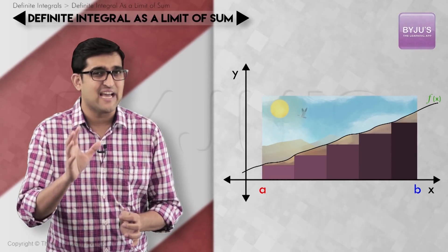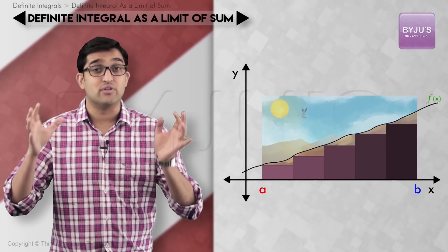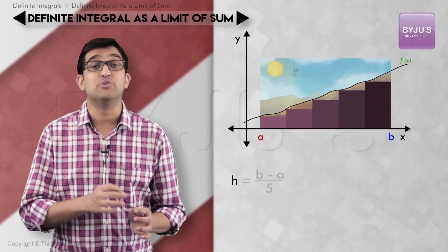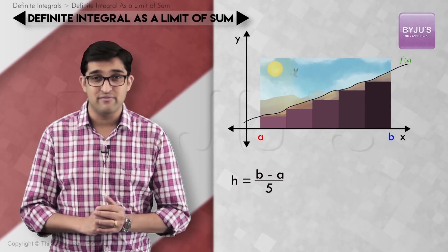Let me start by inserting five rectangles of equal width into the figure, so that means width of each of the rectangles will be given by h = (b - a)/5.